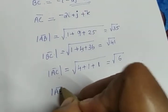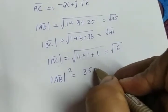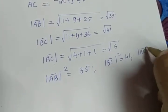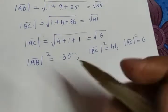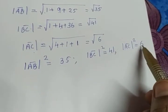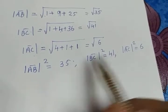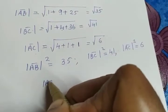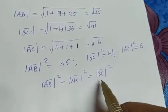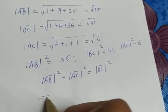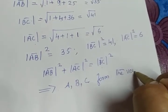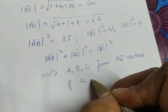Now we find the squares: magnitude of AB squared is 35, magnitude of BC squared is 41, and magnitude of AC squared is 6. We check: 35 plus 41 is not 6; 41 plus 6 is not 35; but 35 plus 6 gives 41. So magnitude of AB squared plus magnitude of AC squared equals magnitude of BC squared. Pythagoras theorem is satisfied. Therefore, A, B, C form the vertices of a right-angled triangle.